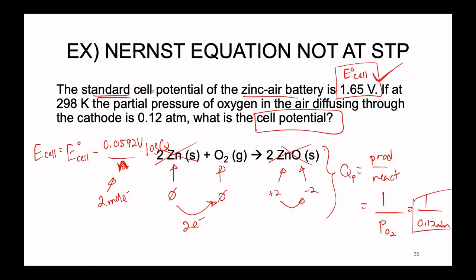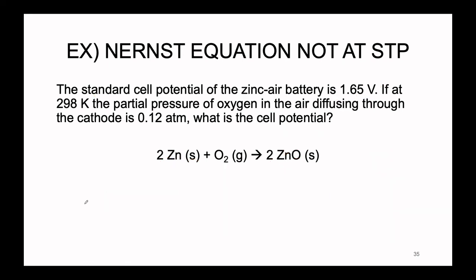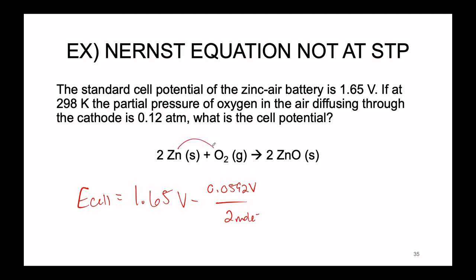Plugging everything in: E(cell) = 1.65 V − (0.0592 V / 2) × log(1 / 0.12). The log of (1/0.12) is taken, and we find that the total from this calculation is 1.62 volts.